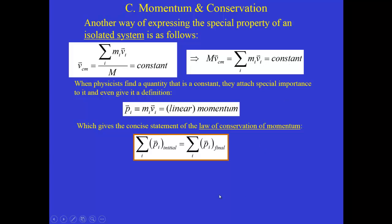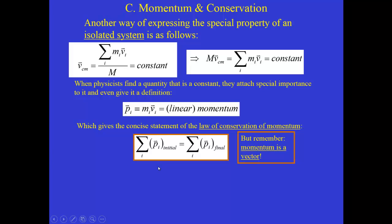If we have an initial situation and then a final situation for two or more objects making up a system, we can set those two momentum totals equal to each other, which helps us understand how a system evolves over time. Remember, though, that these momentum terms are vectors. When we write them down we have to take direction into account — it's not enough just to write m times v; we must account for direction.